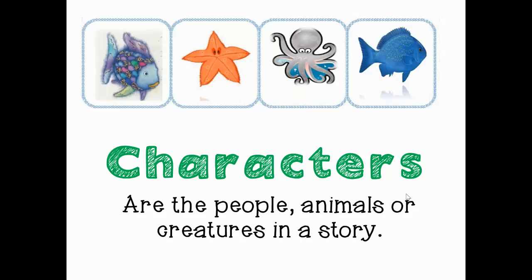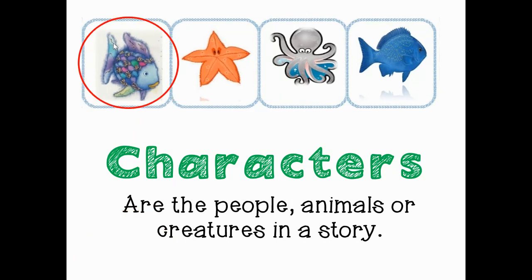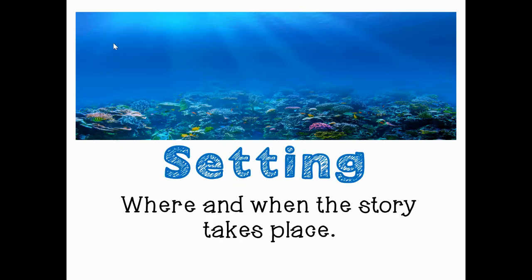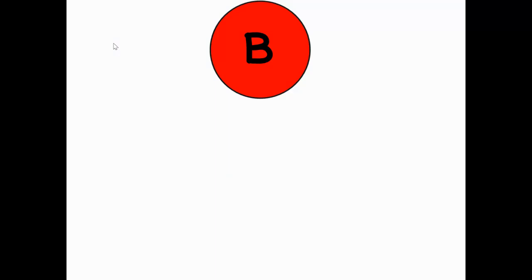In Rainbow Fish, there are a lot of characters. We see Rainbow Fish, a starfish, the white octopus, and the little blue fish. But the main character was Rainbow Fish. The setting in Rainbow Fish was a beautiful blue ocean — that's where the story happens. I'm going to tell the story in my own words using a few pictures.